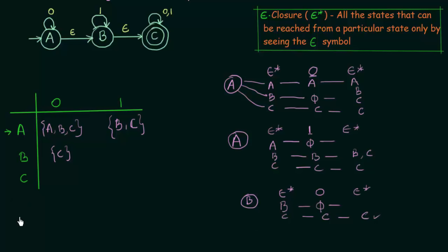Now for B on input 1: B's Epsilon Closure is B and C. B on input 1 goes to B itself, and C on input 1 goes to C itself. Epsilon Closure of B is B and C, and Epsilon Closure of C is only C. So we get B, C, C — meaning states B and C. So B on input 1 goes to states B and C.